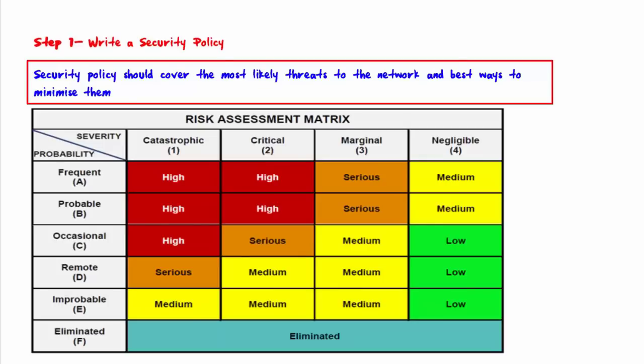For example, a risk estimated to cost $5,000 each time and likely to occur seven times a year would cost $35,000 yearly, so you'd give it higher priority. If a risk has a very small dollar amount and is not likely to occur very often, then you might decide to simply not bother with it.